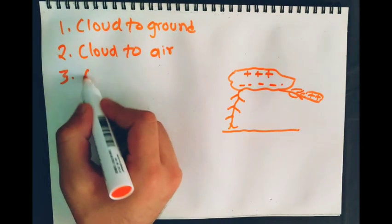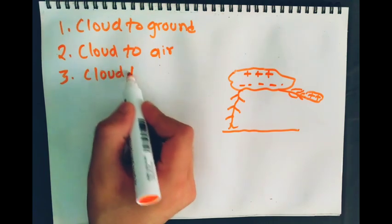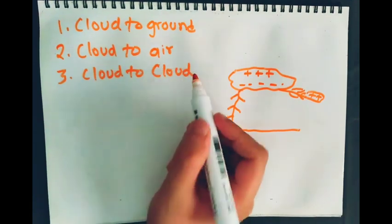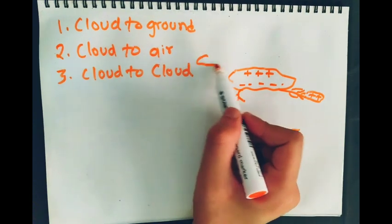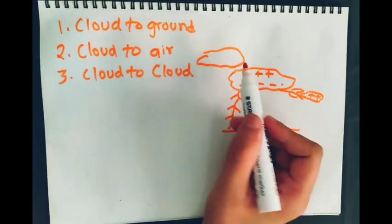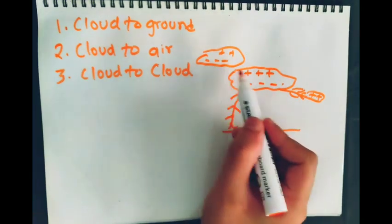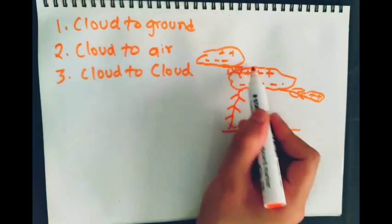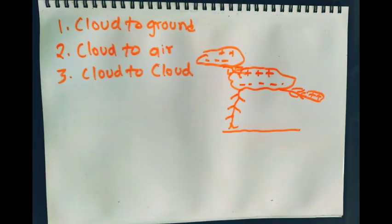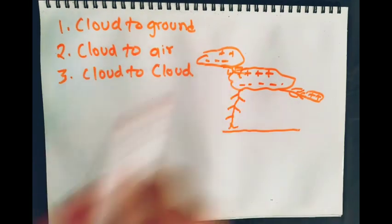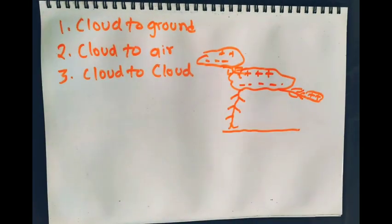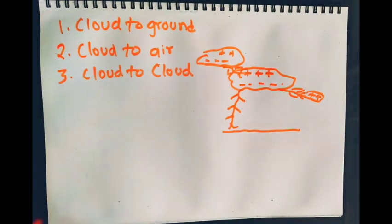Third is cloud to cloud. Names are very suggestive of what it does. So we have another cloud which can have charges of its own and we can have discharge among the clouds, from one cloud to another. We will see this like a fractal structure starting from one cloud and ending at another cloud.